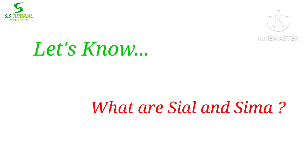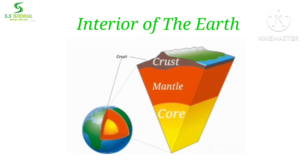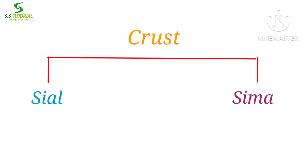Before we start to find out the differences between Sial and Sima, let's know about them. In the interior of the earth, there are three distinct layers: the earth crust, mantle, and core. The earth crust has been further divided into two layers according to their composition, density, and temperature. They are Sial and Sima.